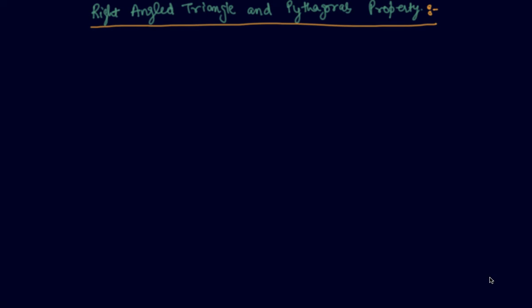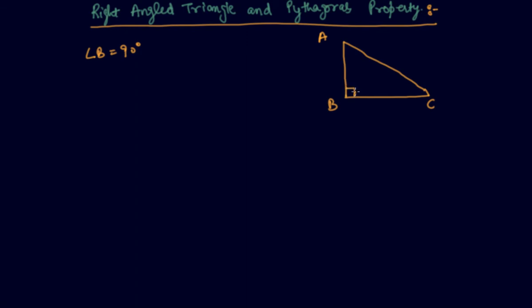Hello students, my name is Sumit Mehta. Today in this lecture we will discuss about right angle triangles and the Pythagorean property. A right angle triangle is a triangle in which one angle is 90 degrees. I am drawing one here, with the right angle at B, so angle B equals 90 degrees.